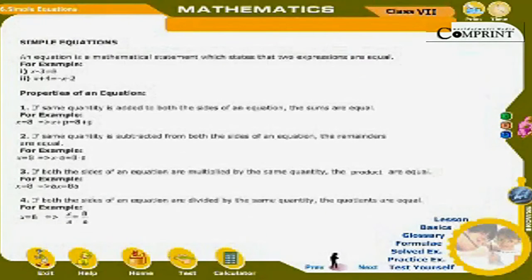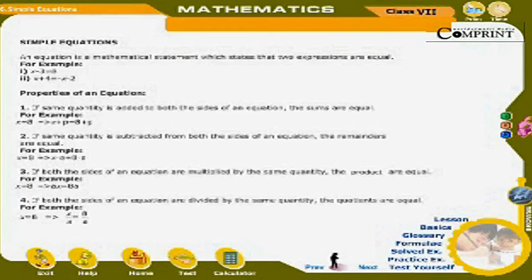Chapter 6: Simple Equations. An equation is a mathematical statement which states that two expressions are equal. For example, first: x minus 3 is equal to 8. Second: x plus 4 is equal to minus x minus 2.